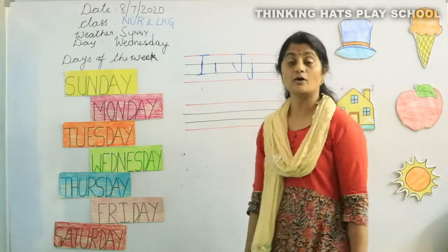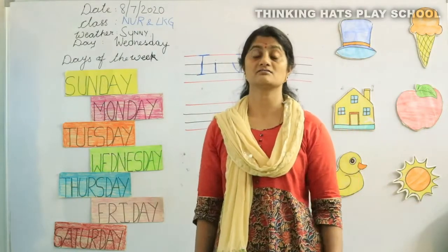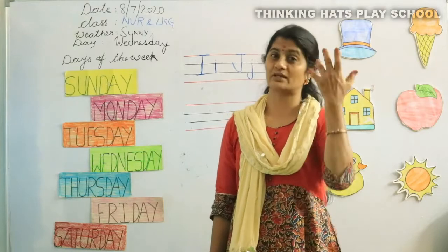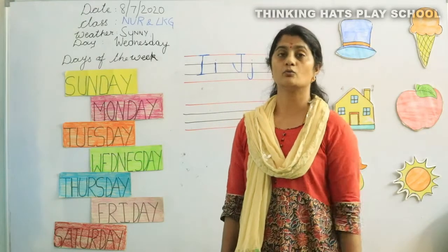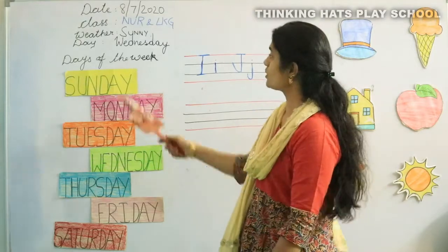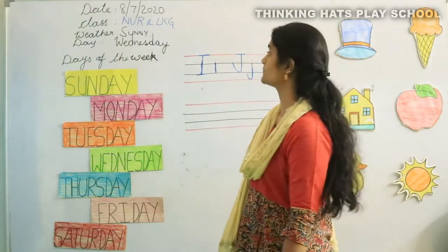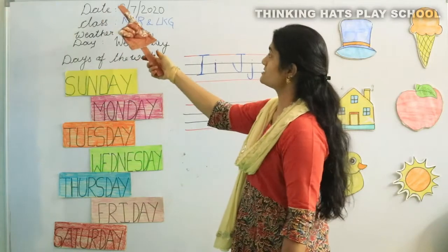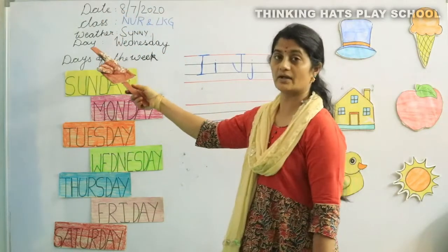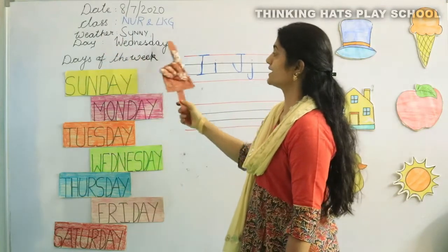And how is the weather today? It's very very sunny. The sun is very bright and we are feeling a little sweaty also. It's very very warm outside. The sun is very bright. So the weather is sunny — it's a sunny day. Date is 8th July 2020, the weather is sunny and the day is Wednesday.